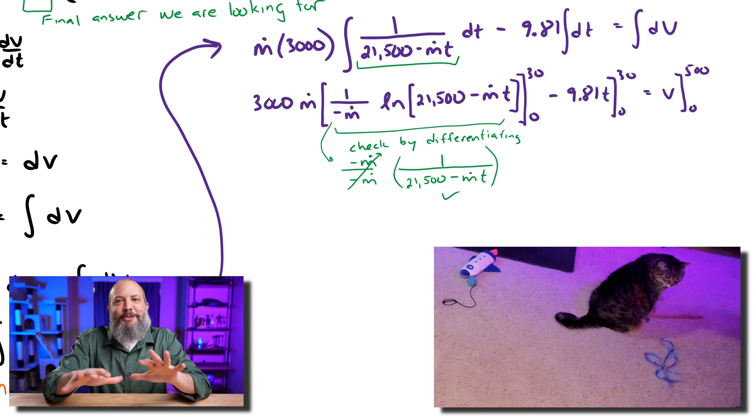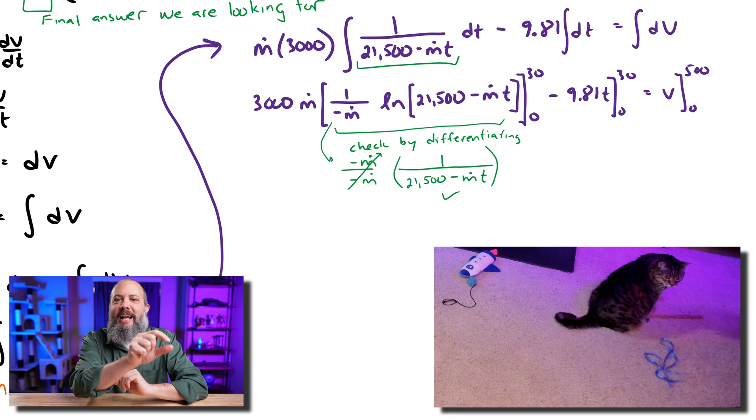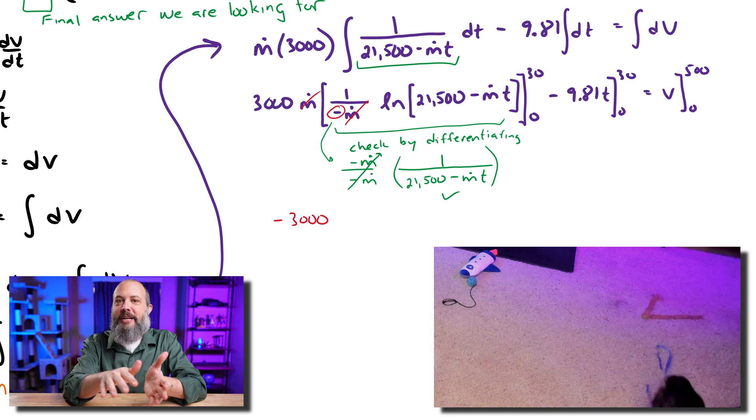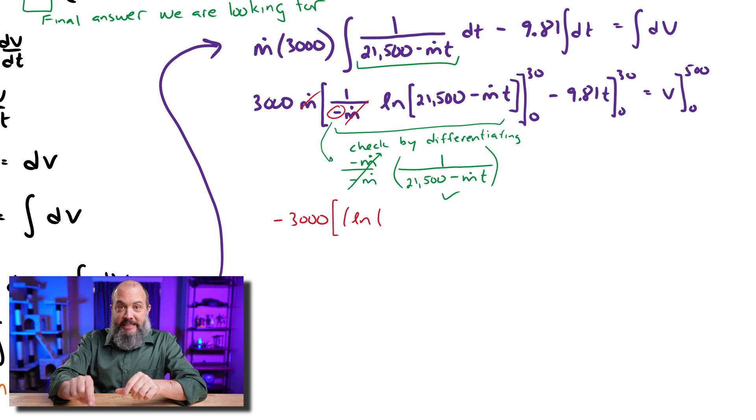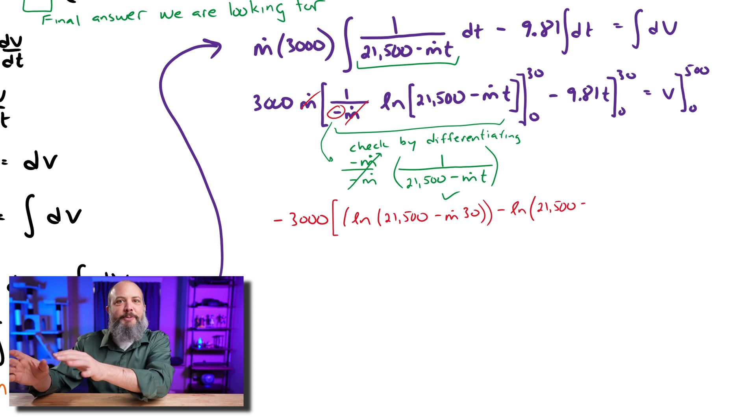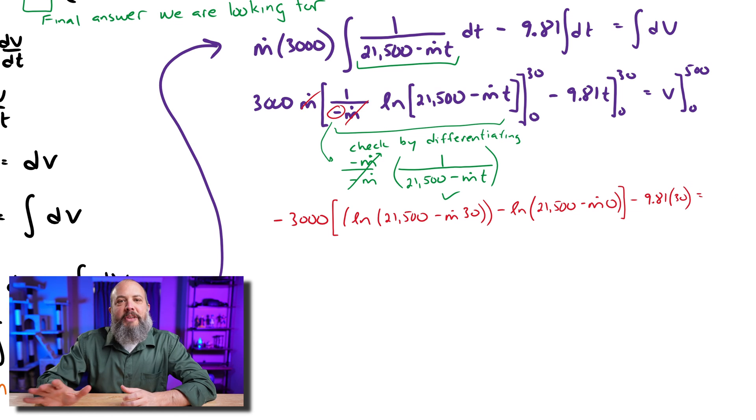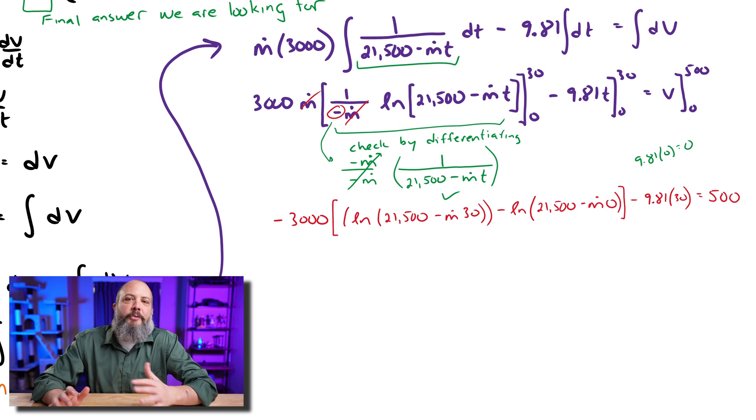So just moving on with some algebra here, the m dot in front next to the 3000 cancels this m dot that's in the denominator. We've got bounds 0 to 30. So we plug in 30 and then subtract the same expression again, natural log, but with plugged in 0 for time. And then we've got 9.81 times 30, and then we've got 500 over on the right-hand side.